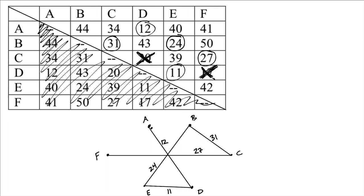Now we have a Hamiltonian path: A, D, E, B, C, F. Once everything is connected in a Hamiltonian path, we just need to connect the two ends. So from A to F is our final connection with a weight of 41. There is our Hamiltonian circuit produced by the sorted edges algorithm.